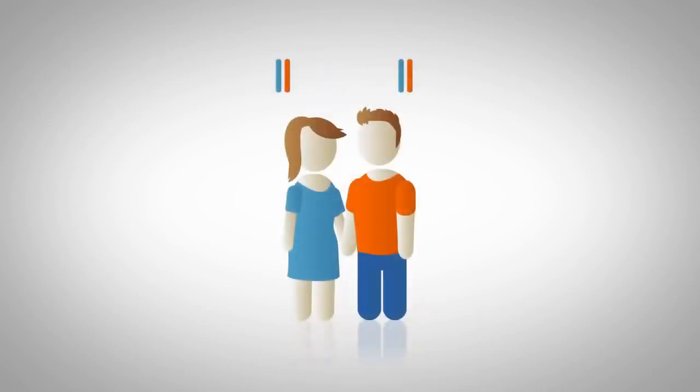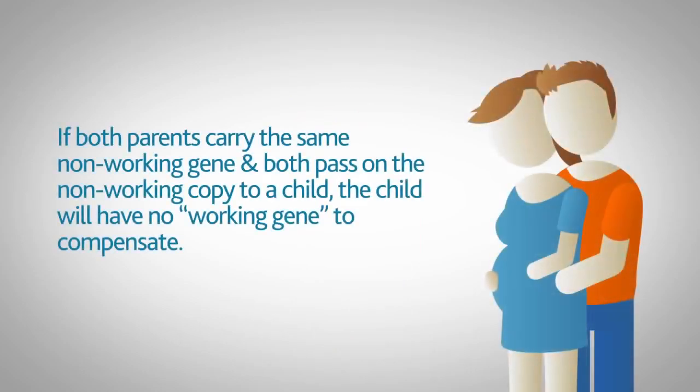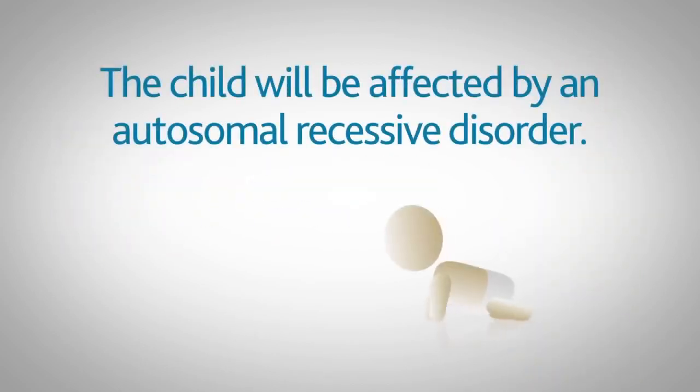This only becomes a problem where partners carry copies of the same non-working gene. If both parents carry the same non-working gene and both pass on the non-working copy to a child, the child will have no working gene to compensate. In this case, the child will be affected by an autosomal recessive disorder.